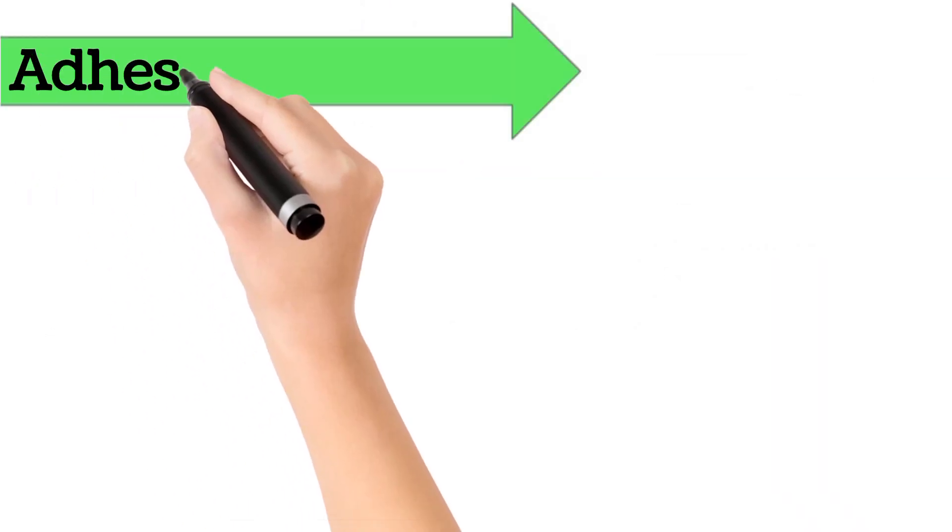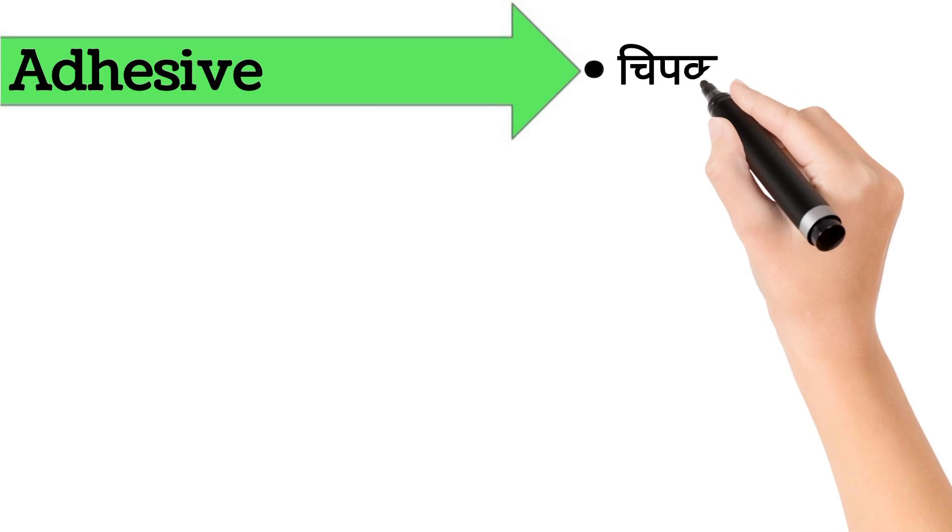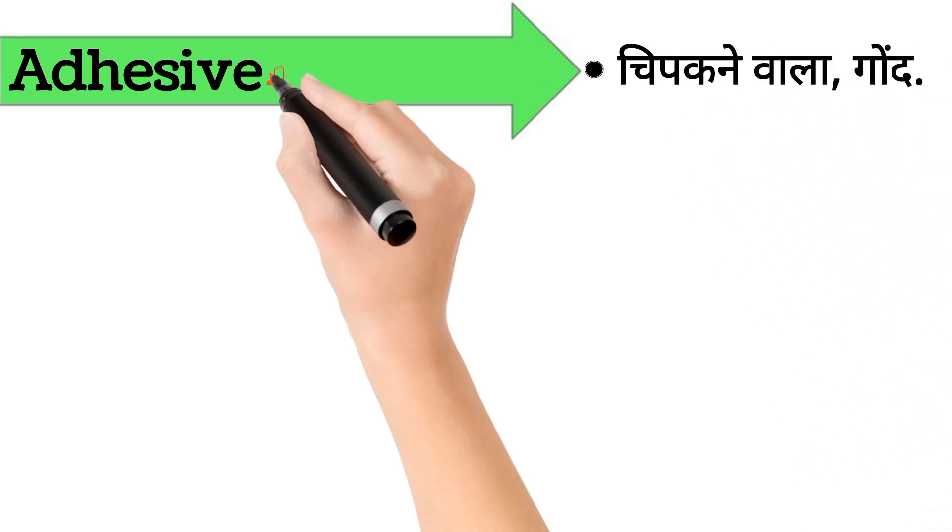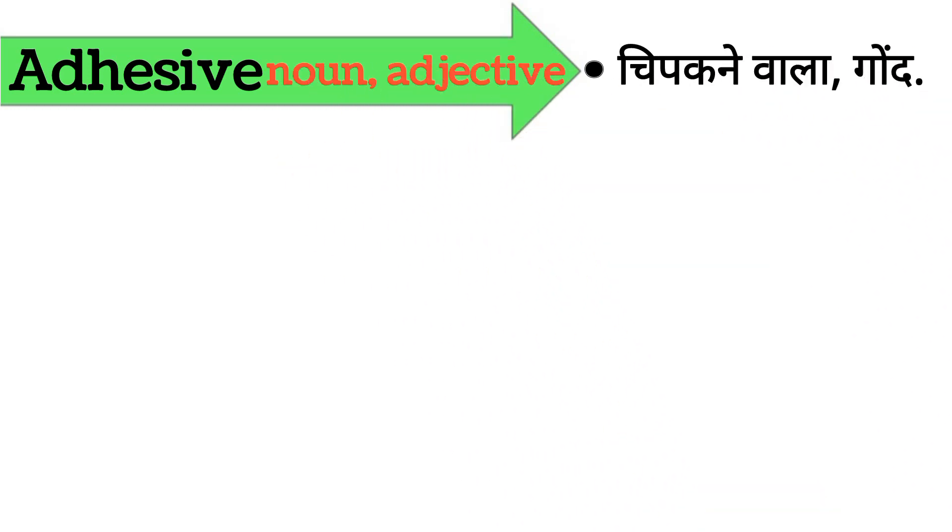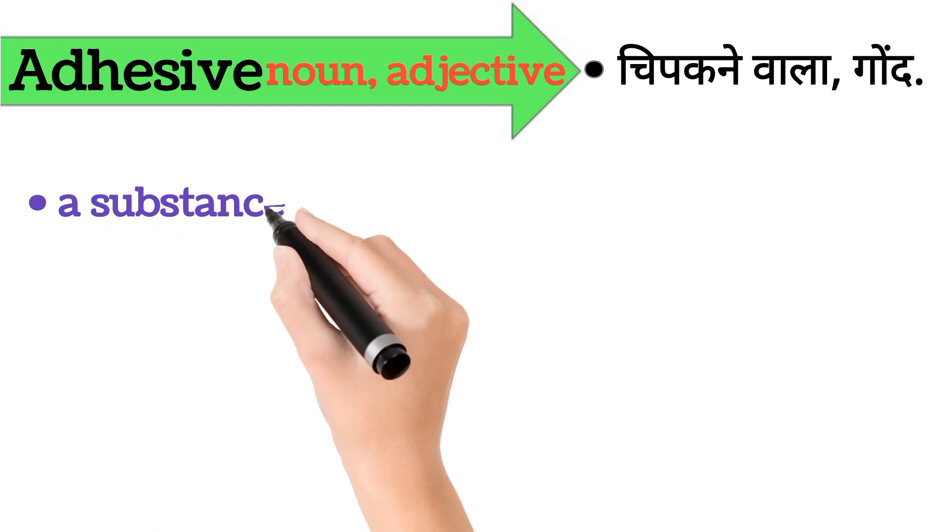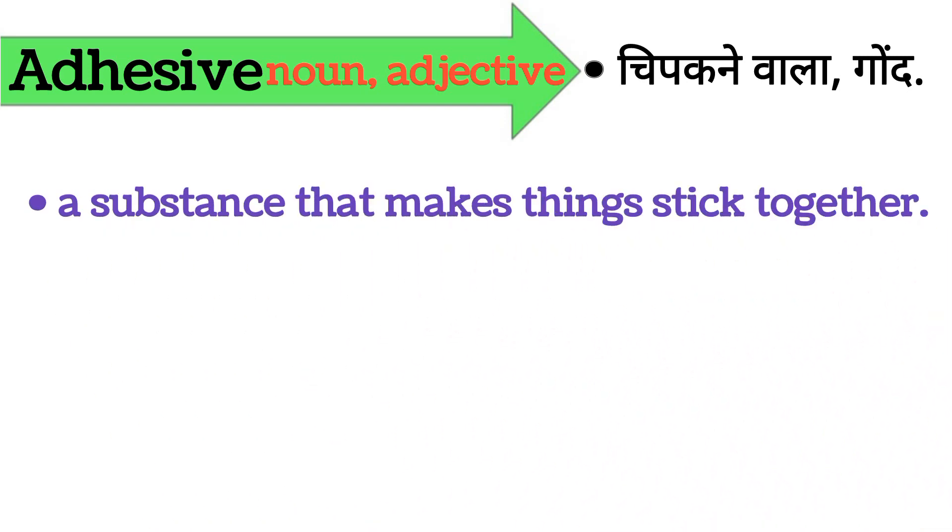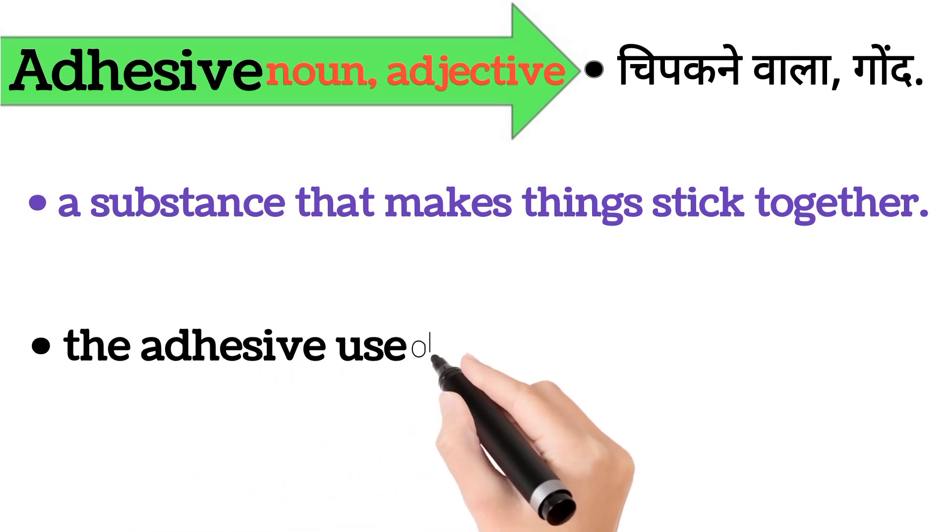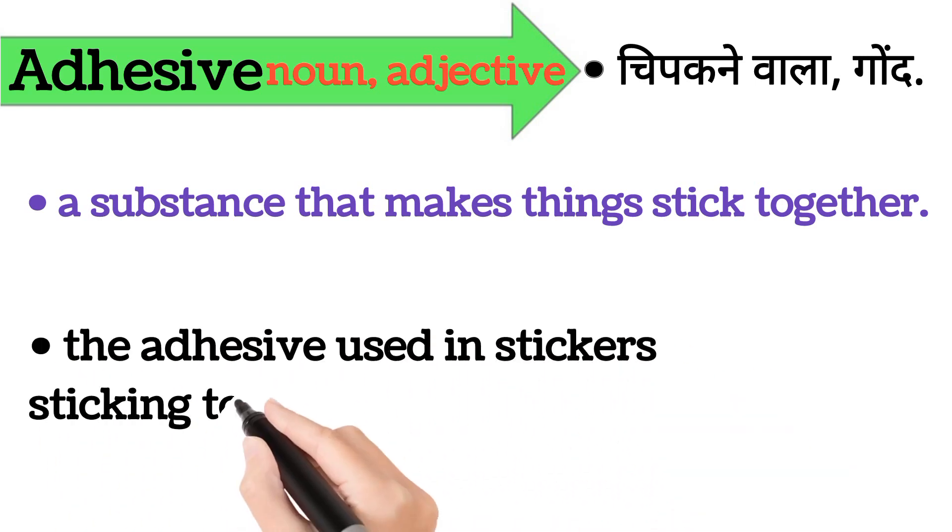Adhesive. Adhesive ka arth hai chipakne waala, gond. Adhesive word noun or adjective form mein aata hai. It's also called a substance that makes things stick together. Iska example hai, the adhesive used in stickers sticking to various surfaces.